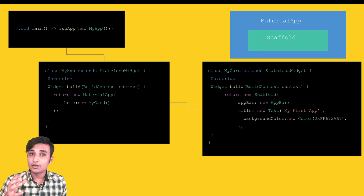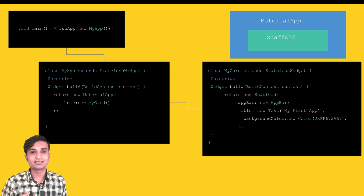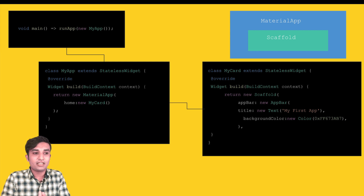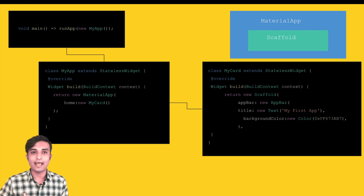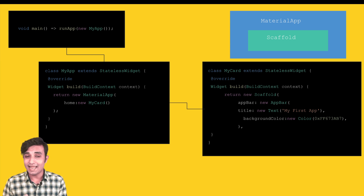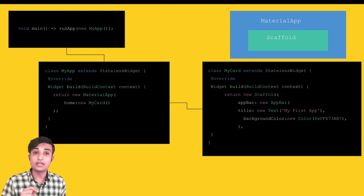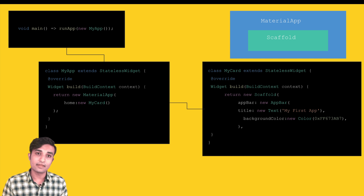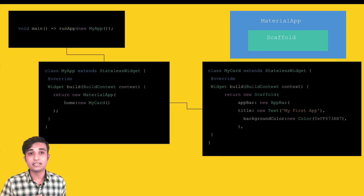With a StatefulWidget, even if you reload your app, it will retain the previous values and maintain its state. The very first thing you should learn is void main, which has runApp, which calls a different class. Inside that class we have a widget build method — this is the method that displays our widgets on the screen. It's a build method that initiates the build objects and returns the content written inside it.